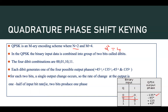In case of QPSK, we can send four different symbols with four different phases. The four dibits are represented as follows: 00, 01, 10, and 11, with corresponding phase angles of 45 degrees, 135 degrees, minus 45 degrees, and minus 135 degrees.